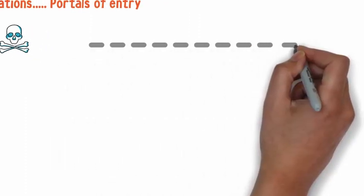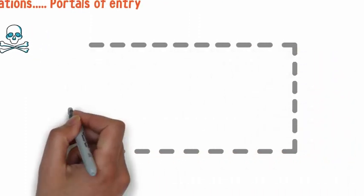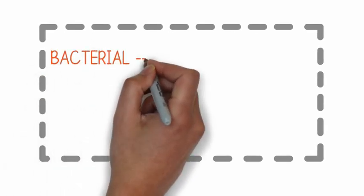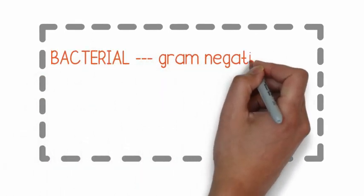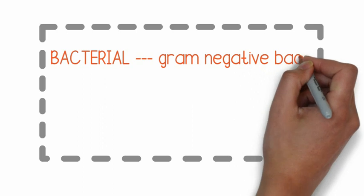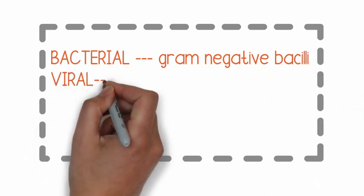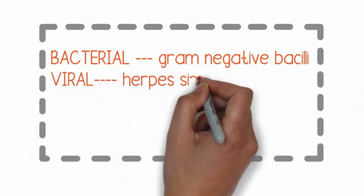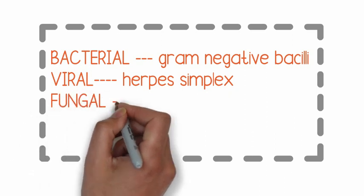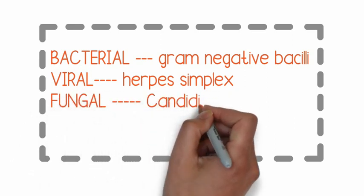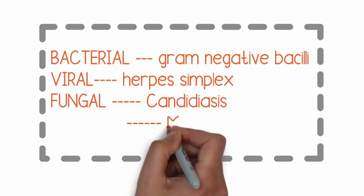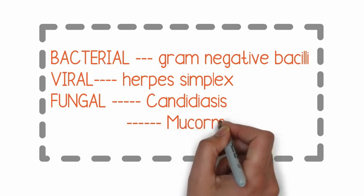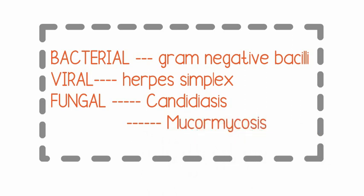Microorganisms that are normally kept in check by our immune system end up becoming pathogenic. Host defense mechanisms play a very important role in resisting infections. The most common bacterial infections are associated with gram-negative bacilli. The most common viral infection is oral herpes simplex. The most common fungal infection is candidiasis — specifically pseudomembranous and erythematous types — and mucormycosis, which is seen in patients with a history of diabetes.